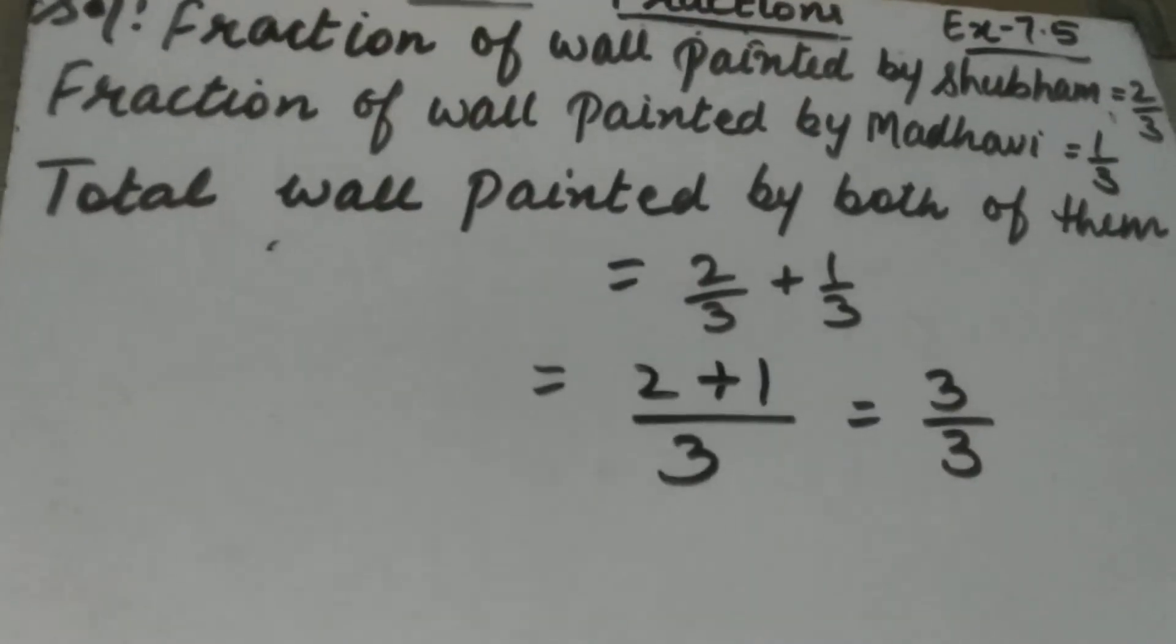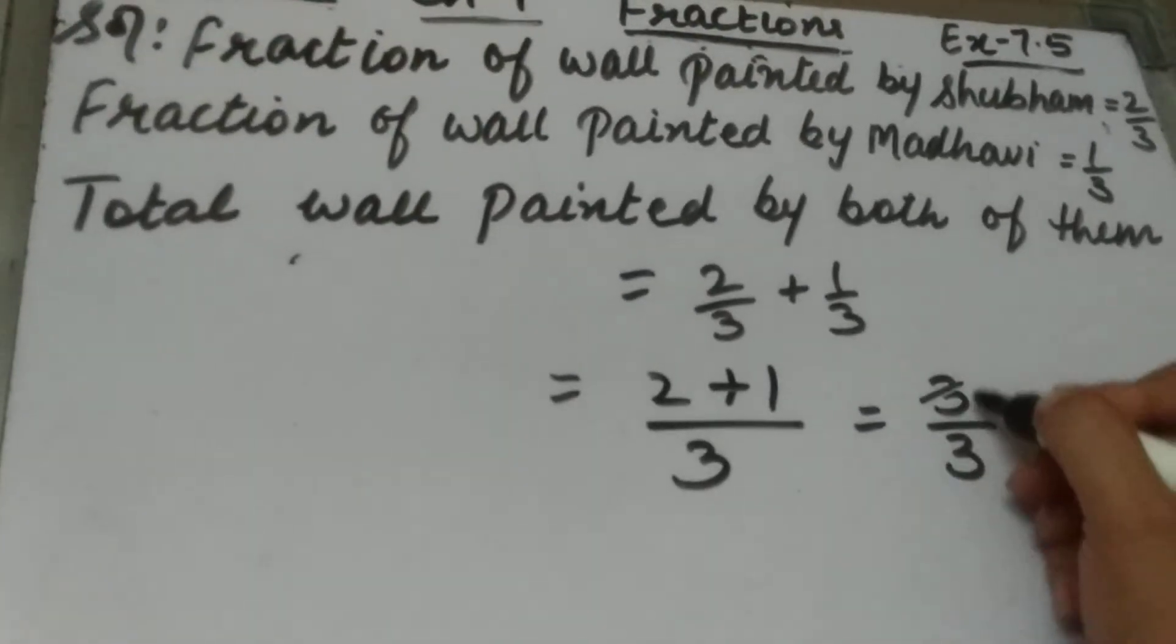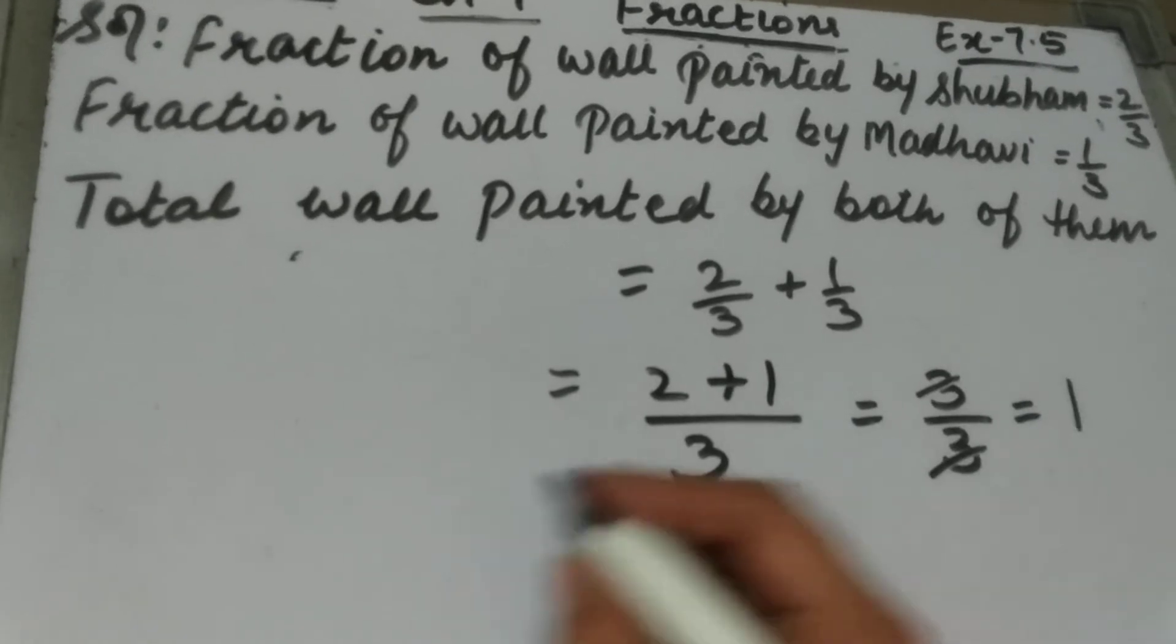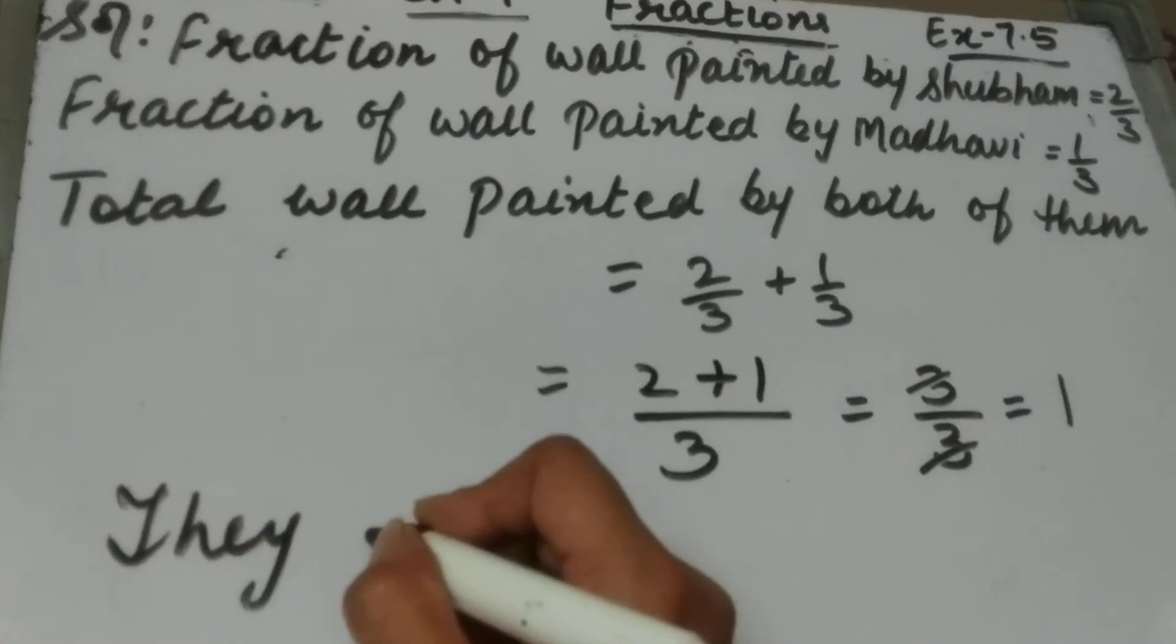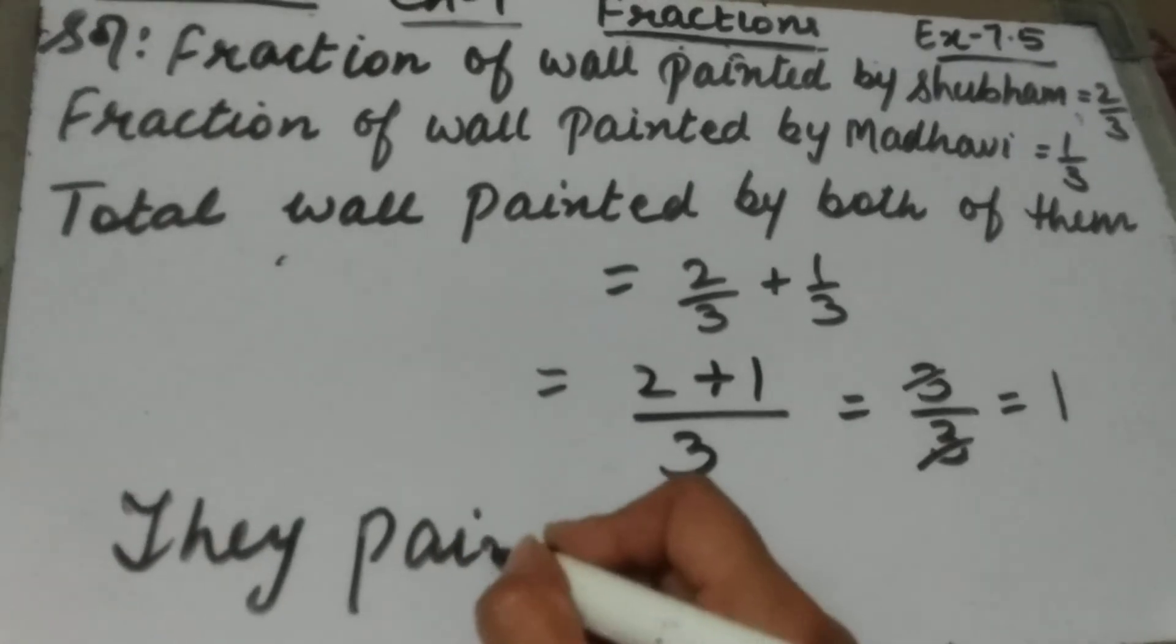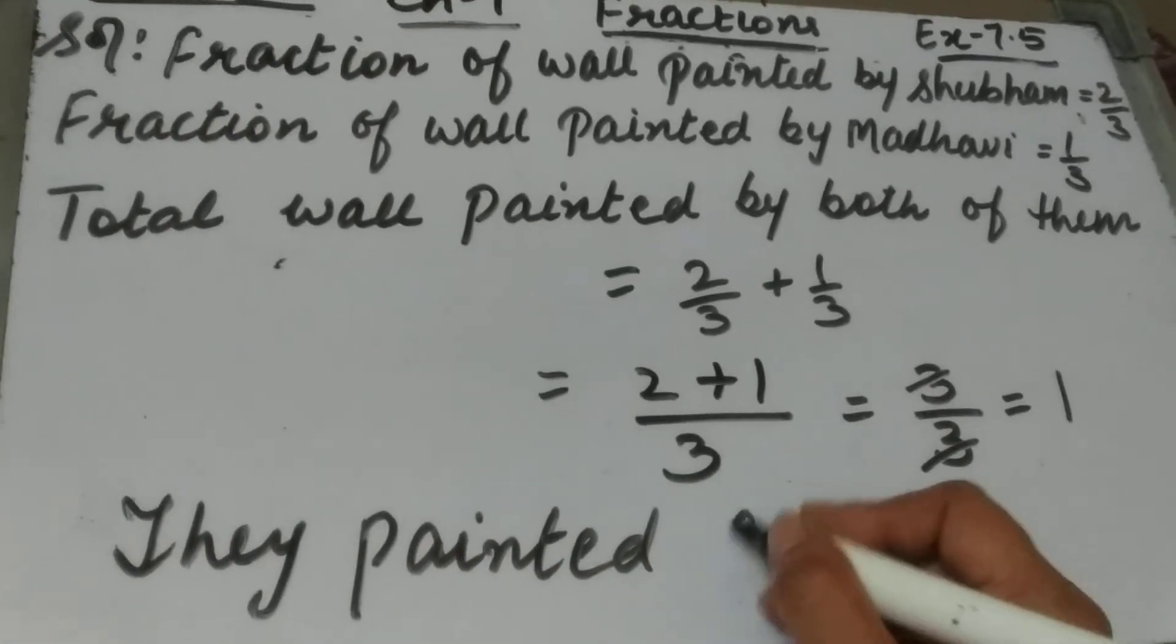This will be 3/3, and when we cancel it out, it will be 1. So your answer is they painted the whole wall, they painted the complete wall.